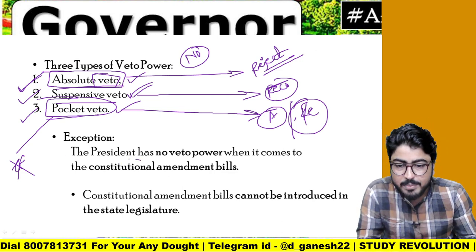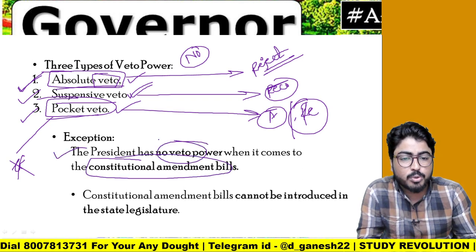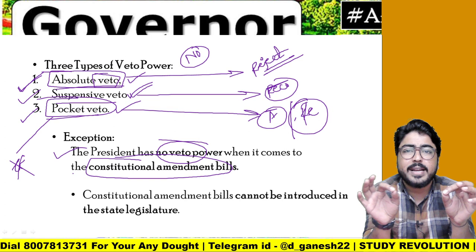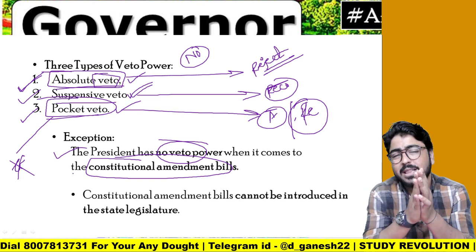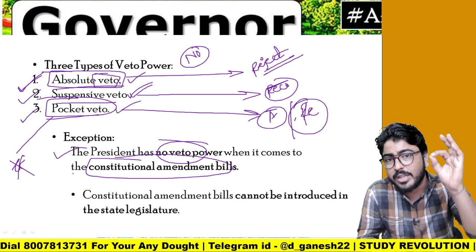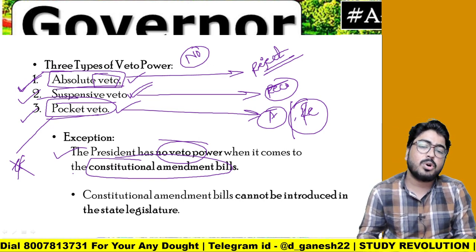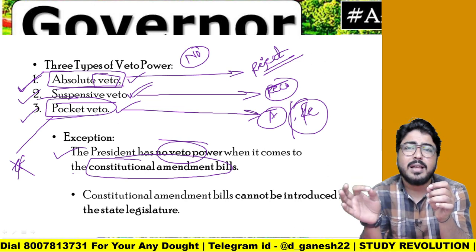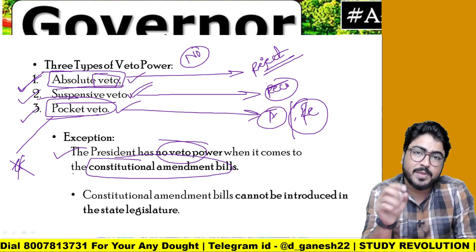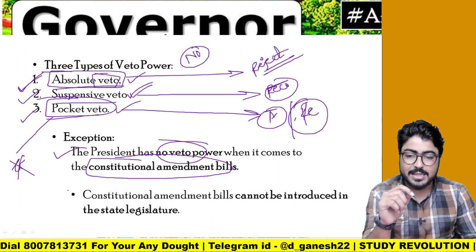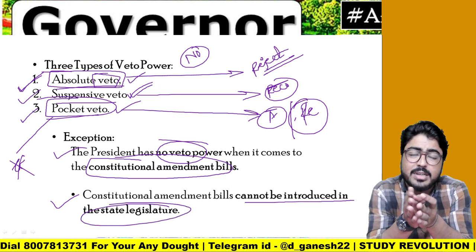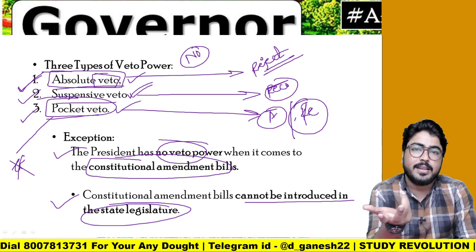If it comes to a constitutional amendment bill, the President has no veto power. When it comes to the constitutional amendment bill, the President does not have veto power — no matter what, the assent must be given. As for the governor, constitutional amendment bills cannot be introduced in the state legislature, so the governor has no relation to constitutional amendment bills. It is simple policy.